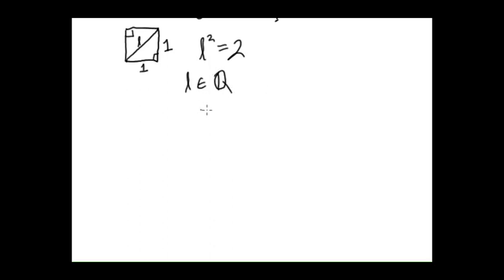If this were true then we could write L as the quotient of two integers, and of course n must not be zero, and m and n are integers.